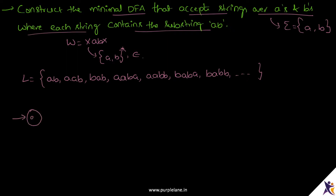Let's say Q0 is our initial state. Let's consider the minimal string AB and try to construct the skeleton of the DFA. On seeing A from Q0 we move to state Q1, on seeing B from Q1 we move to state Q2 and accept this string. Q2 is our final state.